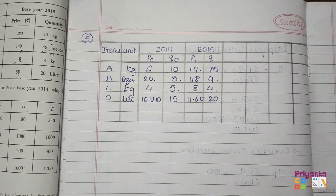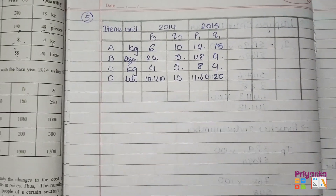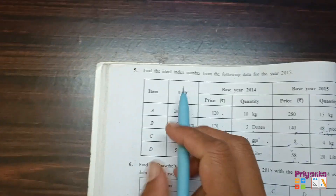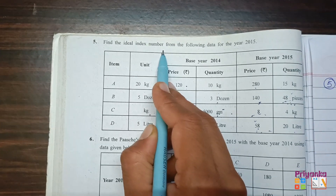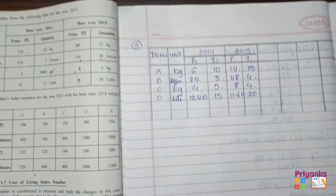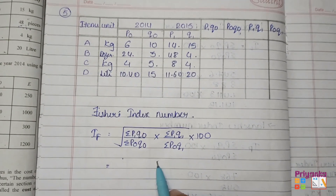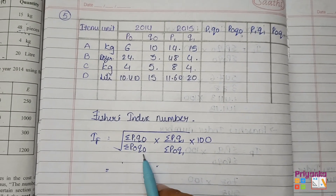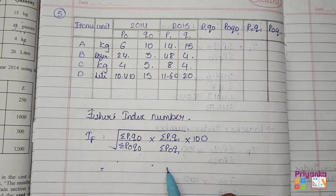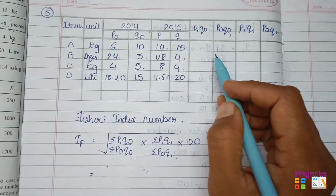Now make your table ready with the information of base year and current year. They have asked to find the ideal index number, which is Fisher's index number. I'll write down the formula. Note: even if you take additional columns, it doesn't make any difference — the answer will be the same.